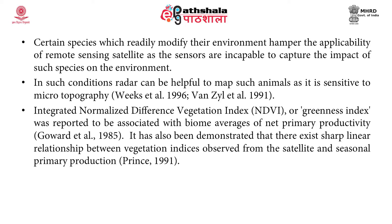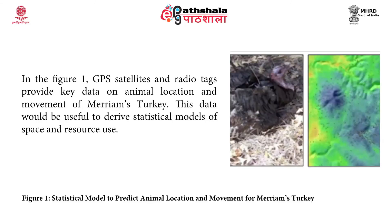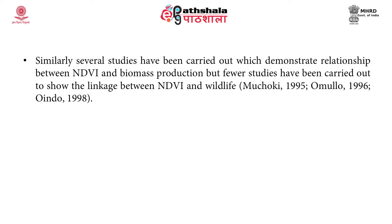The Normalized Difference Vegetation Index (NDVI), also called the greenness index, is a measure of the health of vegetation and was reported to be associated with biome averages of net primary productivity. It has also been demonstrated that a sharp linear relationship exists between vegetation indices observed from satellites and seasonal primary production. For example, GPS satellites and radio tags provided key data on animal location and movement of Merriam's Turkey, useful to derive statistical models of space and resource use. Several studies demonstrate the relationship between NDVI and biomass production, but fewer studies have shown the linkage between NDVI and wildlife.